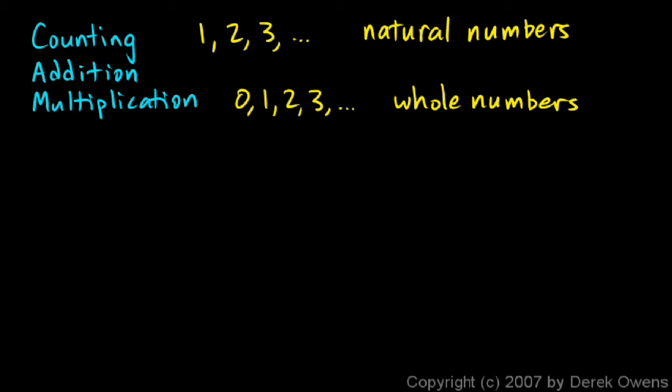Well how about subtraction? Well certainly we can do subtraction with these numbers. You could do 8 minus 5. That would give you 3. But sometimes we get a result that isn't a whole number. What if we did 5 minus 8? That would give us negative 3. So if we're going to do subtraction, we need to add negative numbers into our little number system here.